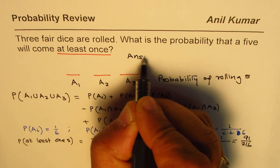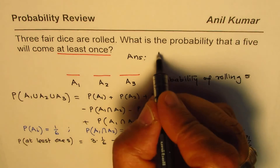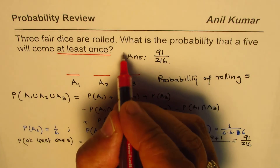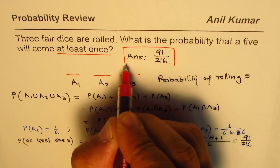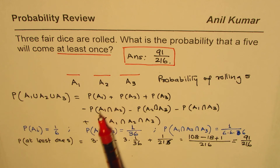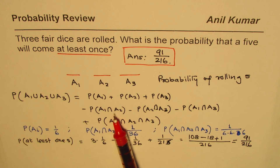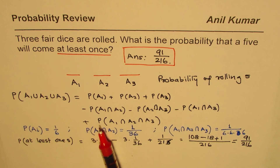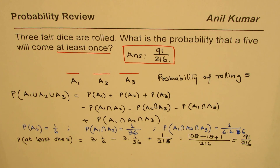Our answer is 91/216. That is how we solve this type of problem. When an event occurs more than twice — like three times here — we must subtract the pairwise intersections and add back the intersection of all of them using the inclusion-exclusion principle. I hope that helps. Thank you and all the best.